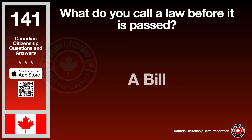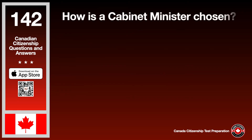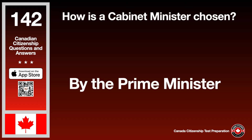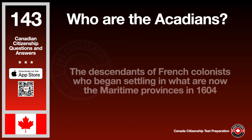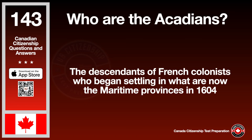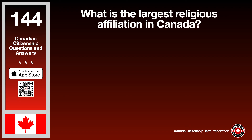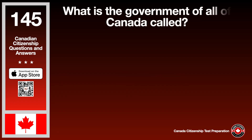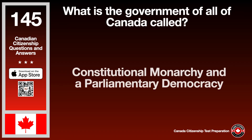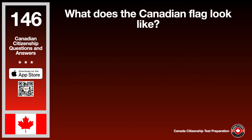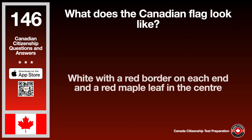What is a major river in Quebec? The answer is the St. Lawrence River. What did the Canadian Pacific Railway symbolize? The answer is unity. What do you call a law before it is passed? The answer is a bill. What is the largest religious affiliation in Canada? The answer is Catholic. What is the government of all of Canada called? The answer is constitutional monarchy and a parliamentary democracy. What does the Canadian flag look like? The answer is white with a red border on each end and a red maple leaf in the centre.